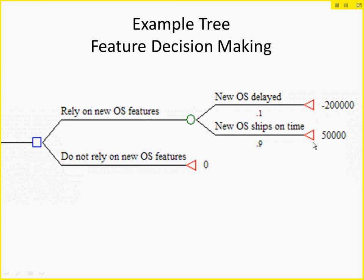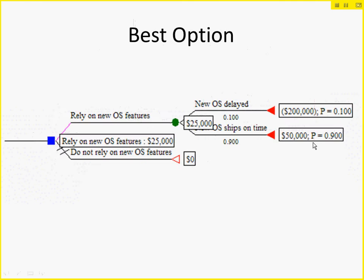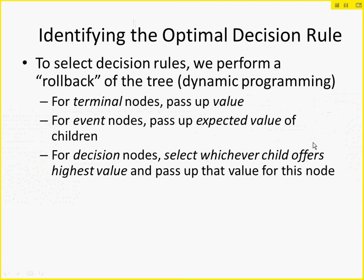One way we use these decision trees is called a rollback, also known as backwards induction, related to Bellman's dynamic programming. It's a bottom-up computation. For a terminal node, the rollback value is simply the value associated with it. For an event node, you take the expected value of the children. For a decision node, you select whichever child offers the best — typically highest — value and pass that up, because that's something you can choose. For an event node you can't choose the outcome; for a decision node you can.